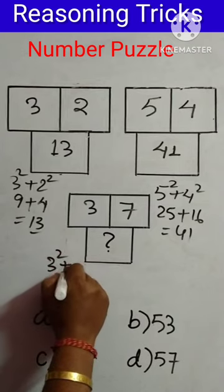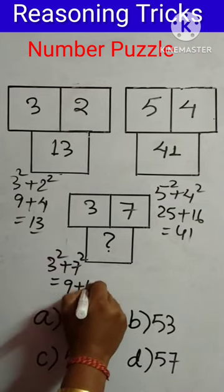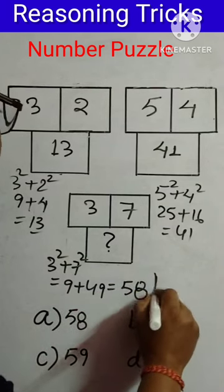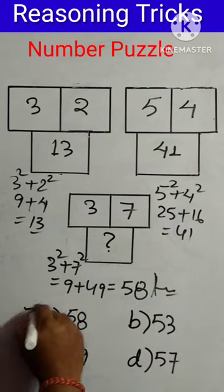3 squared plus 7 squared: 3 squared is 9, 7 squared is 49. 49 plus 9 equals 58. So 58 is the answer, option A.